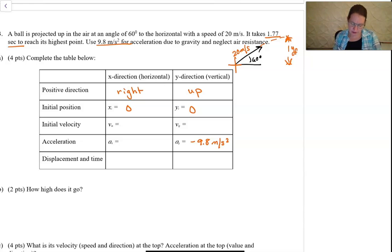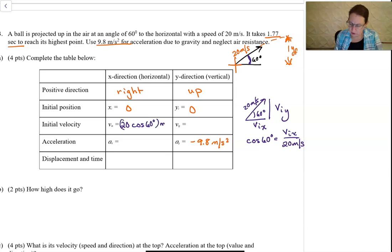For the X initial velocity, if this is 60 degrees and we have 20 meters a second, then cosine of 60 degrees is equal to the initial X over 20 meters per second. And so this is 20 times cosine of 60 degrees meters per second. And this is 20 times the sine of 60 degrees in meters per second. And so this is 17.3 meters per second. And this is 10 meters per second. And there is no acceleration in the X direction.